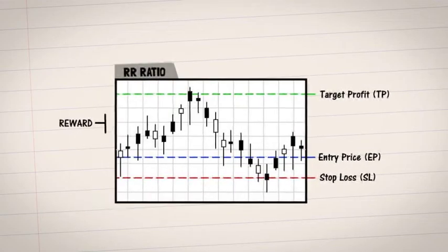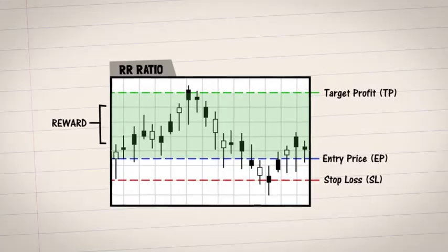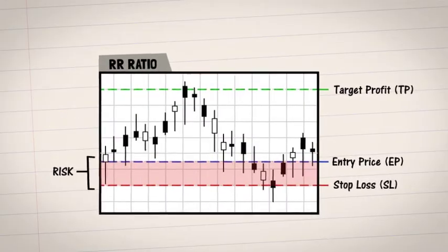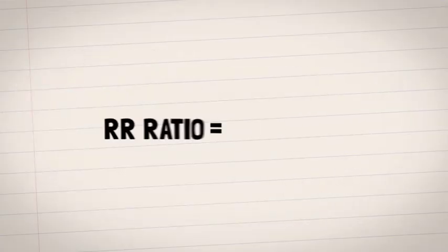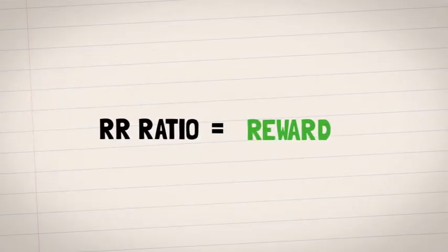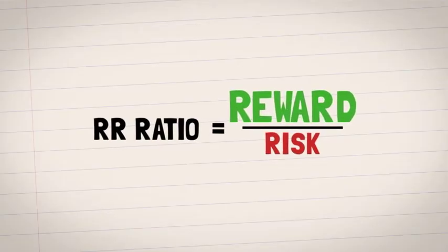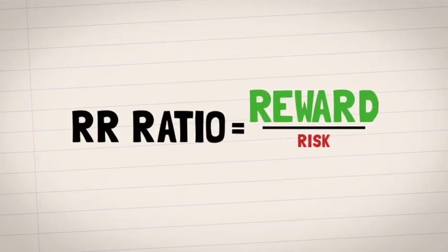To calculate reward, you take the difference between the TP and the EP, while the risk is the difference between the EP and the SL. The RR ratio is then calculated by taking the reward and dividing by the risk. Hence, the higher the reward, the better the RR, and the lower the risk, the better the RR.